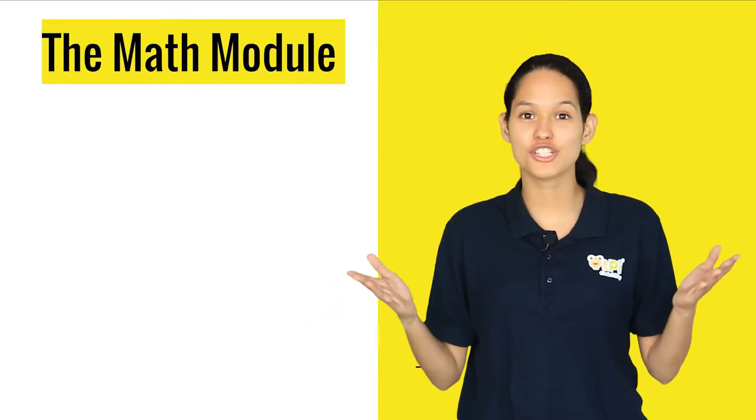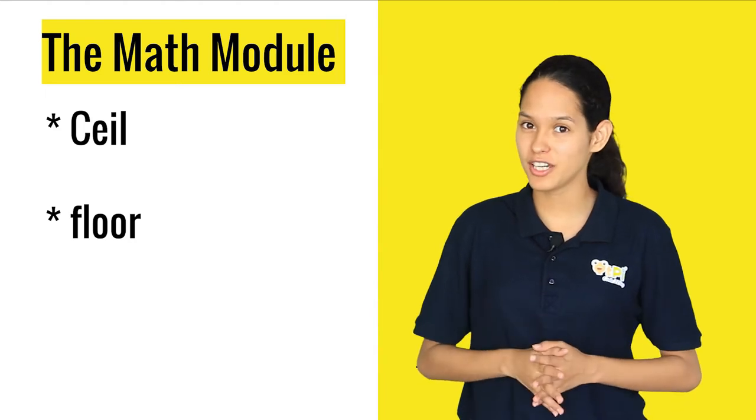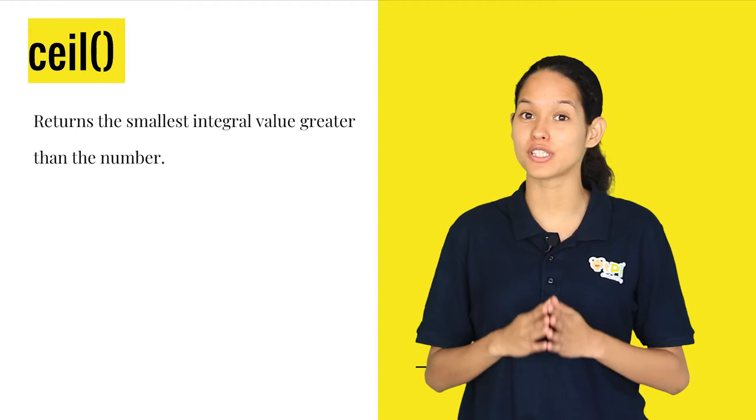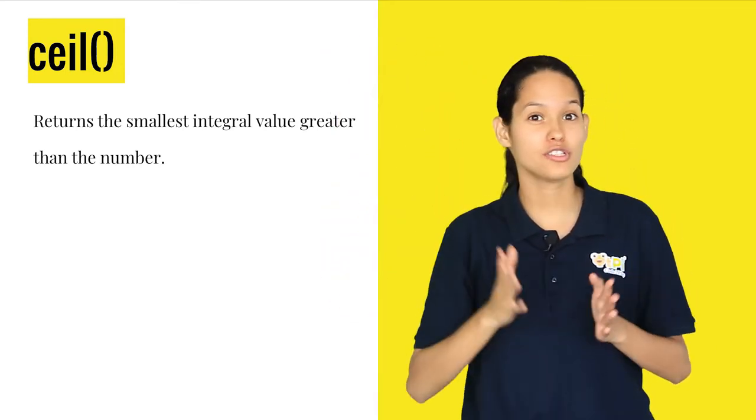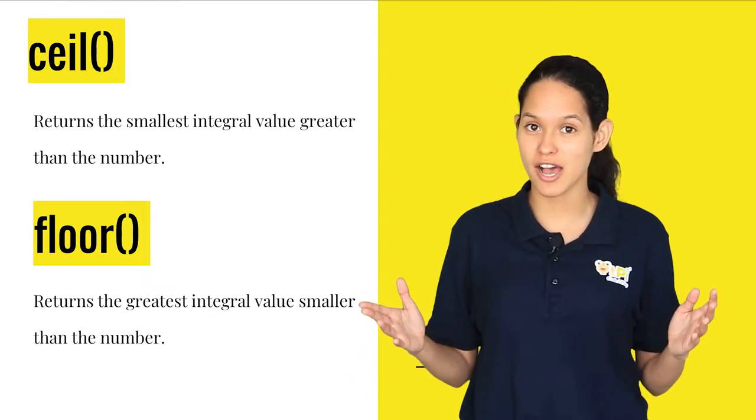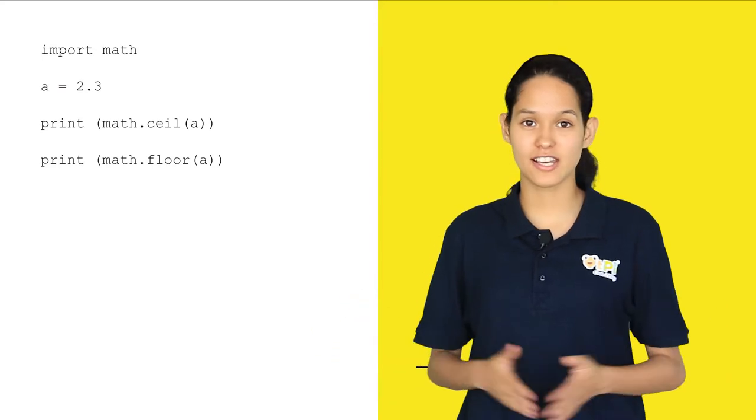What else can you do with math? You can use the ceil and floor functions. Do you know what they do? The ceil function, as the name suggests, gives you the smallest integer value greater than the number. The floor function returns the greatest integer value smaller than the number. Now, let's take a look at an example.